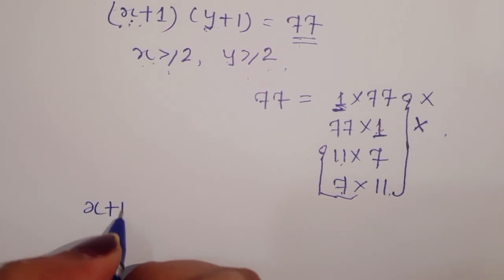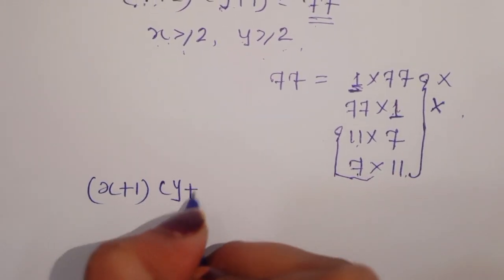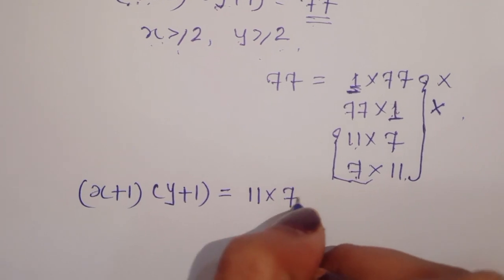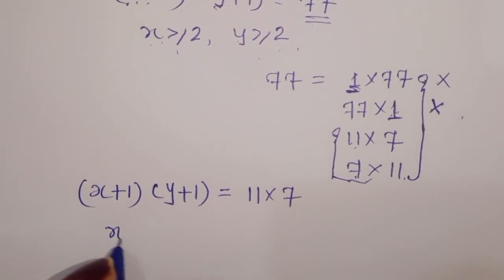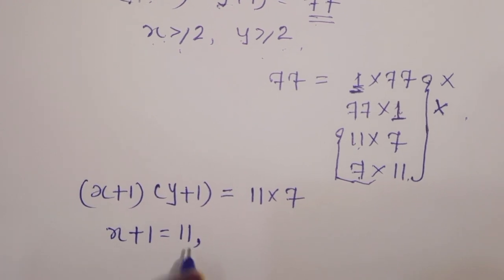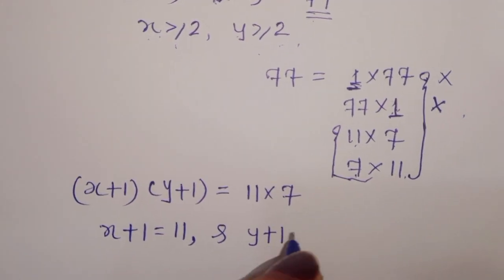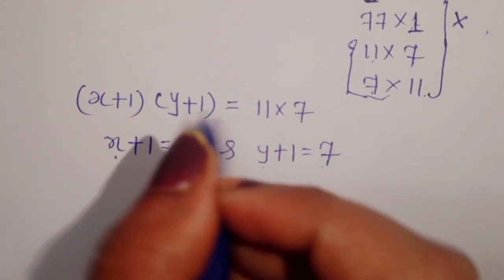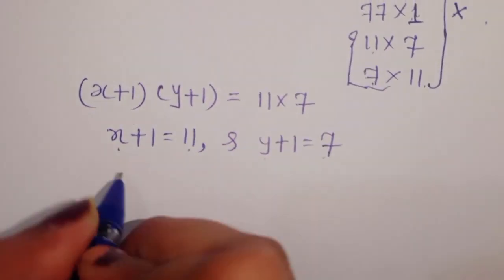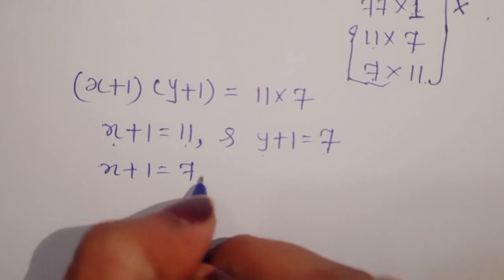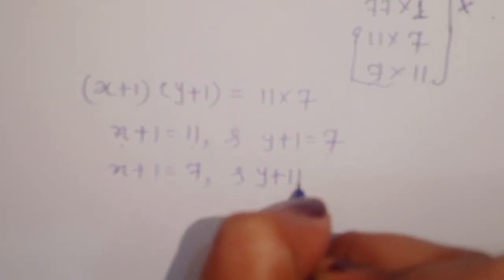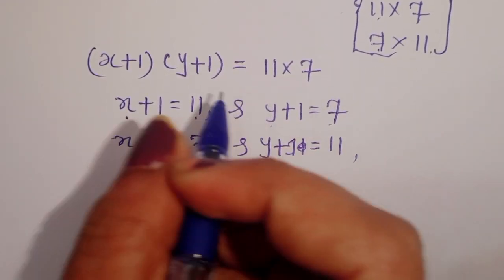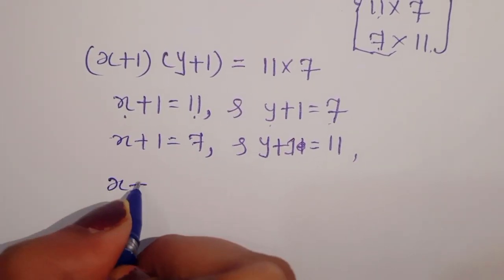We are left with two valid conditions: 11 times 7 and 7 times 11. In the first case, x plus 1 equals 11 and y plus 1 equals 7 — both satisfy x and y greater than or equal to 2. In the second case, x plus 1 equals 7 and y plus 1 equals 11, which also satisfies the condition.